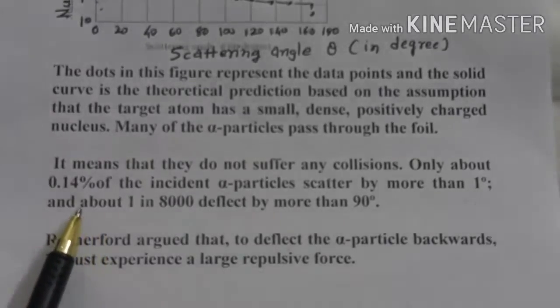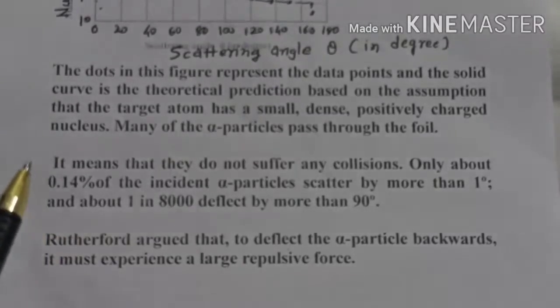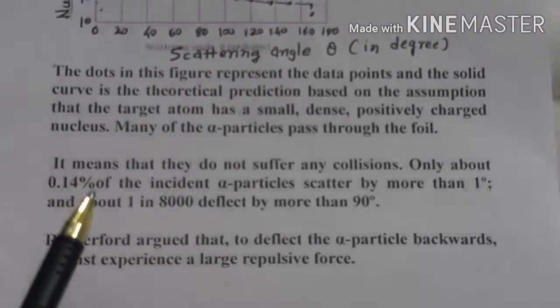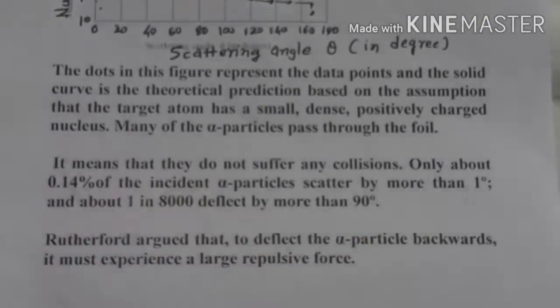You can see already in the figure. This ratio I mentioned earlier: one alpha particle in 8000 deflects more than 90 degrees.